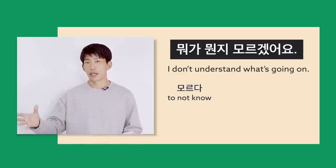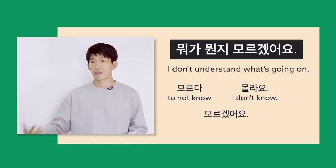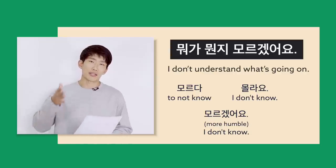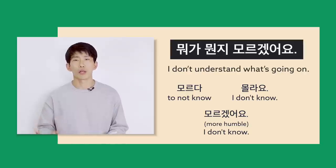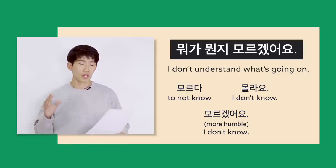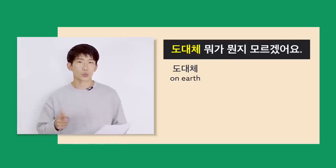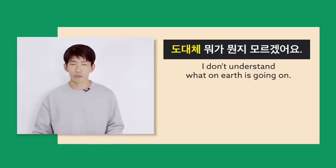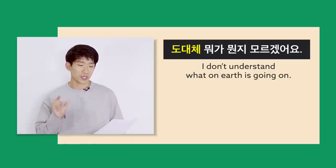If you only know the expression 몰라요, you might be wondering what's 모르겠어요 and how it's different. 모르겠어요 is when you try to understand something but you can't seem to be able to. It's also a more humble way to say 'I don't know.' So 뭐가 뭔지 모르겠어요. You can also emphasize it by saying 도대체, which means 'on earth.' So 도대체 뭐가 뭔지 모르겠어요 — I have no idea whatsoever, I don't understand what on earth is going on.